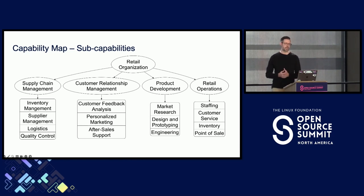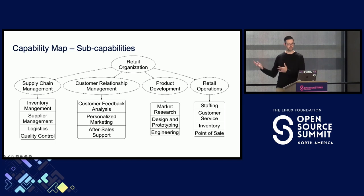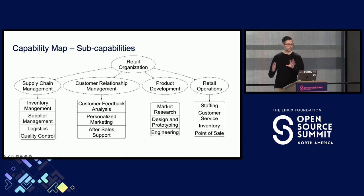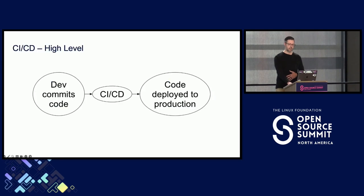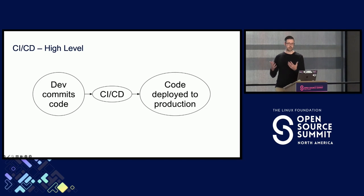We can see the sub-capabilities that we have under the higher-level capabilities — that is what goes into performing each of these business functions. Looking at a breakdown like this, it may help not only with identifying what's happening, but also, if we're intimately familiar with this business, we can glance at this and sort of say, well, this part's going well and this part, maybe not so well. Now we'll take that same idea and apply it to CI/CD. Before we do, starting at a very high level, often we see CI/CD talked about this way.